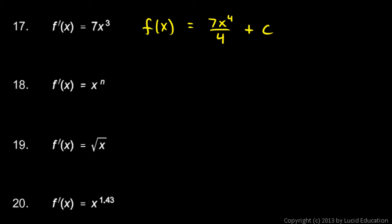Number 18, the derivative is x to the n, so the function is going to be x to the n plus 1 over n plus 1. And this is the power rule for integrals, or the power rule for antiderivatives. If ever you have just a variable raised to a power, and you need to take that antiderivative of that, you just increase the power by 1, and then divide by the new power, plus c.